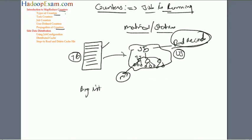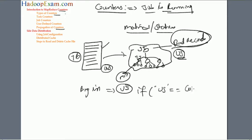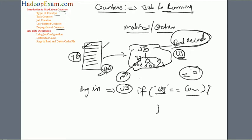The bug counters can help find is not a compile error — it's a wrong condition. For example, actual data comes in as lowercase 'us' but you are comparing against uppercase 'US'. The counter for country equals 'US' would be zero, but when you open the file you see US country entries exist. This tells you the condition missed the case — it should be lowercase.